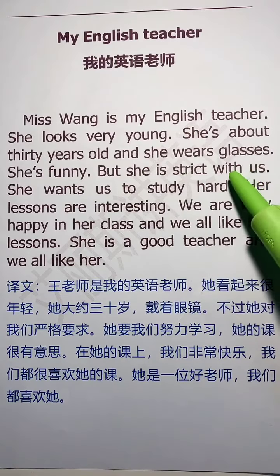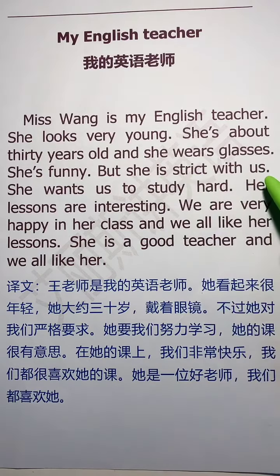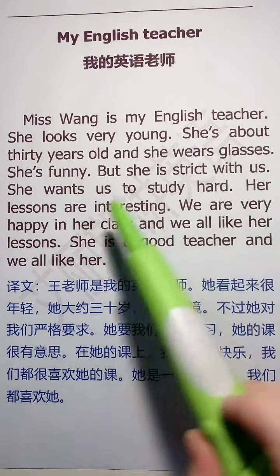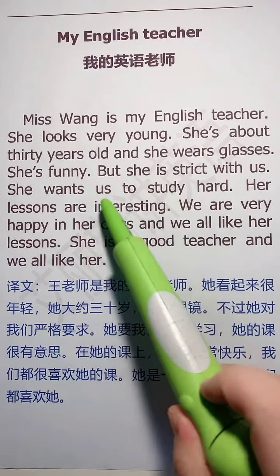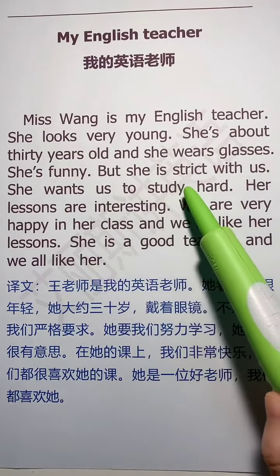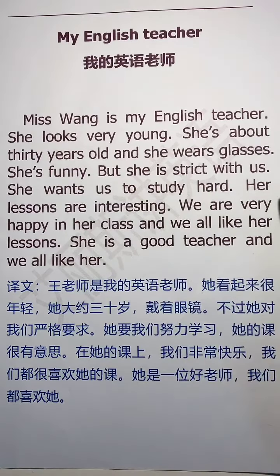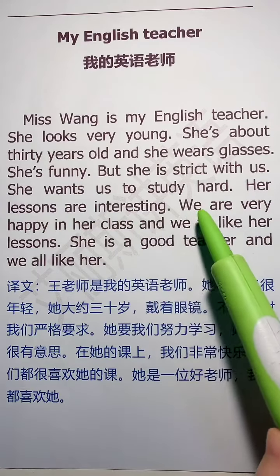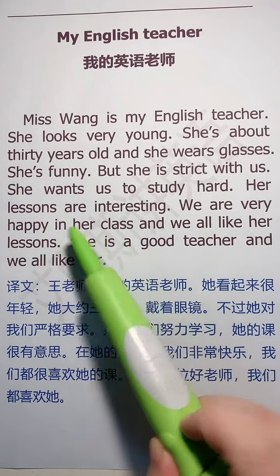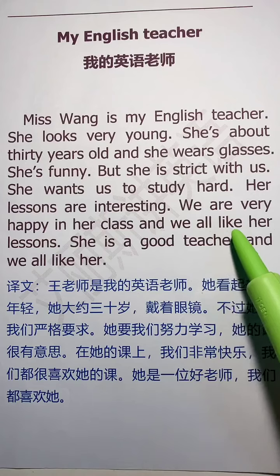But she is strict with us，但是这里有个固定搭配：be strict with somebody，对某人要求严格，她对我们是非常严格的。She wants us to study hard，她想要我们努力学习。想要某人做某事是 want somebody to do something。Her lessons are interesting，她的课是非常有趣的。We are very happy in her class，在她的课堂上我们都非常开心。And we all like her.